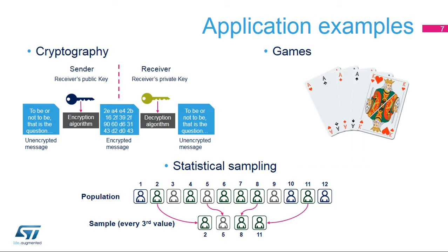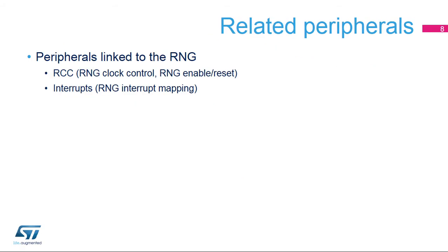The RNG can be used for a wide range of applications, including cryptography, games, and statistical sampling. For example, all the security of cryptography algorithms are connected to the impossibility of guessing the key, so the key has to be a random number — otherwise the attacker can guess it. This is also a list of peripherals related to the random number generator.